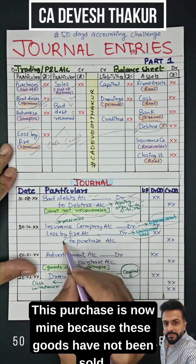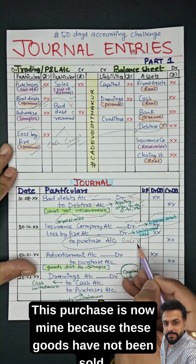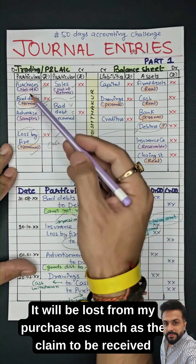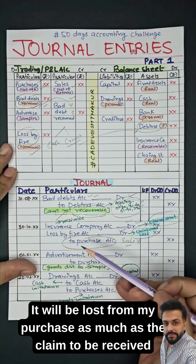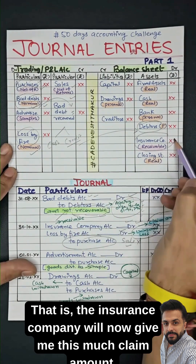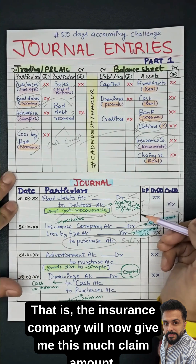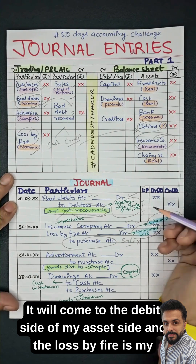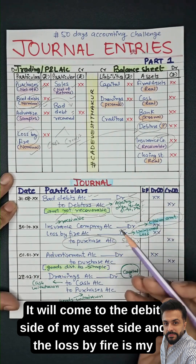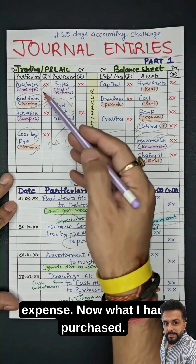These goods were purchased but not sold — they were lost in the fire. They will be reduced from my purchases. The insurance claim receivable will come to the debit side as an asset, and the loss by fire is my expense booked on the P&L.